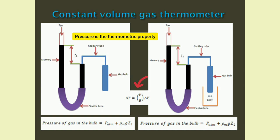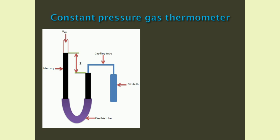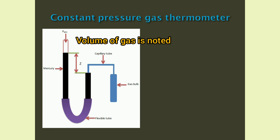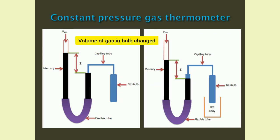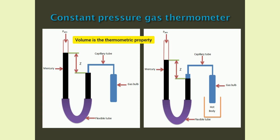Constant pressure gas thermometer. The arrangement is similar to the previous one. Here, the difference in mercury level is marked as Z, and we measure the volume of gas in the bulb. When the gas bulb is in contact with a hot body, the gas expands and pushes the mercury in the right limb downwards. We adjust the difference in mercury level back to Z to keep the pressure of gas in the bulb constant. But the volume of gas changes and is measured. So the conclusion is: the volume of gas varies with change in temperature, and volume is the thermometric property. Using the ideal gas equation, we can find the temperature difference: ΔT = (P/R) × ΔV.